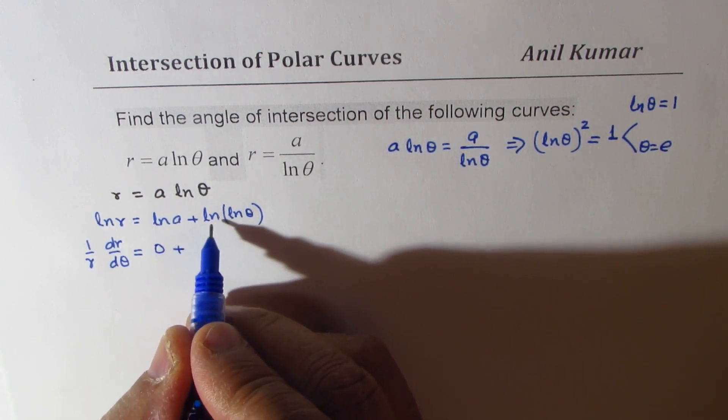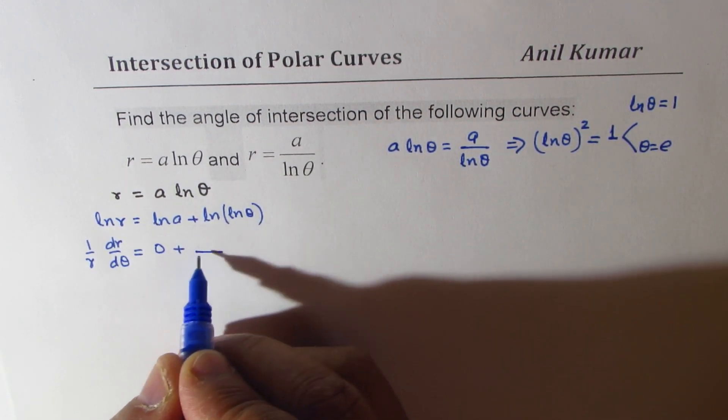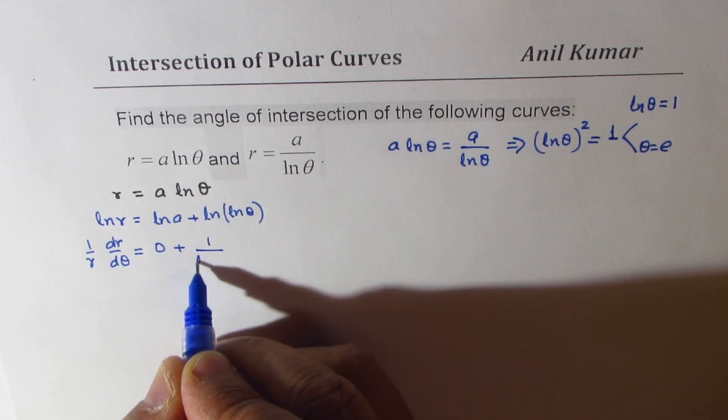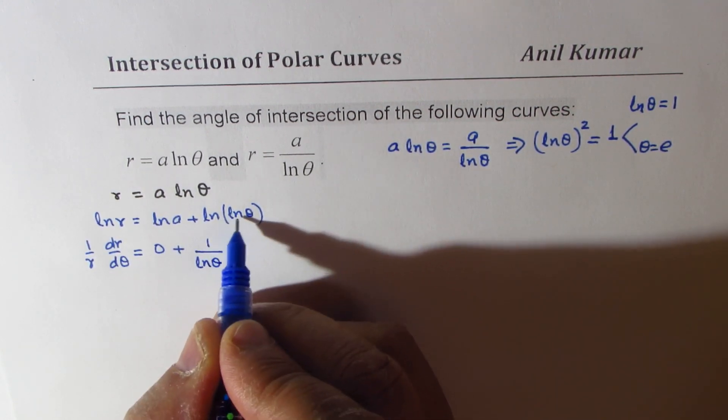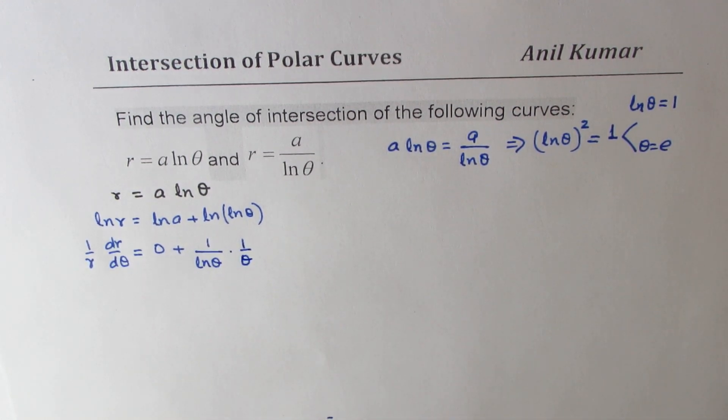And here, differentiating this ln function, we get 1 over ln theta and derivative of ln theta, which is 1 over theta.